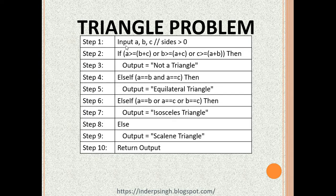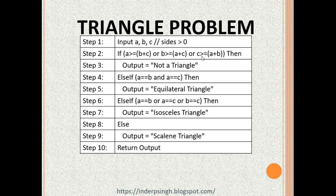Step one inputs three sides A, B, and C, with the assumption that each side is greater than zero. Step two checks whether side A is greater than or equal to the sum of the other two sides — if so, it cannot be a triangle. The same logic applies to side B and side C: if either is greater than or equal to the sum of the other two, it is not a triangle.